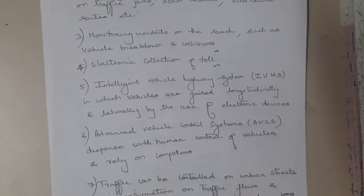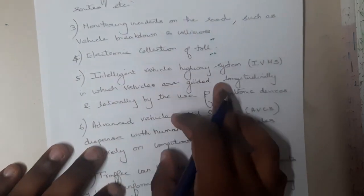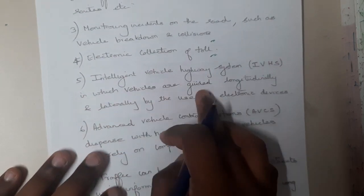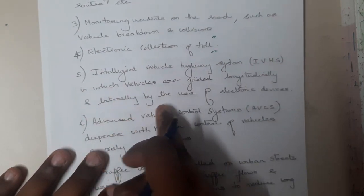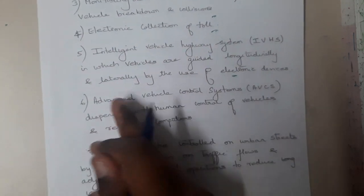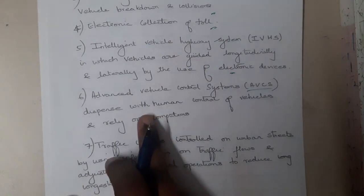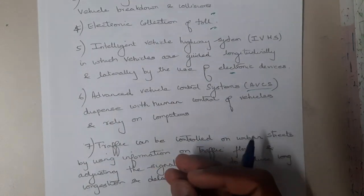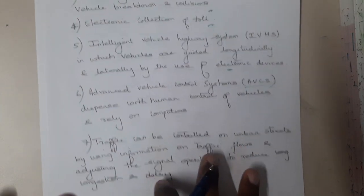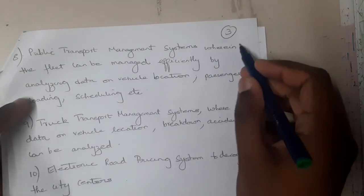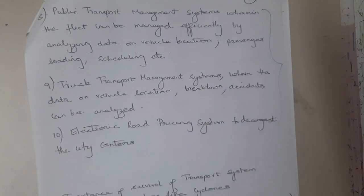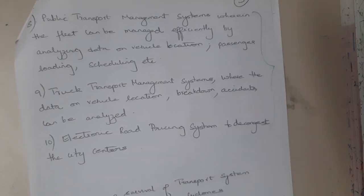Another application is IVHS — Intelligent Vehicle Highway Systems — where vehicles are guided longitudinally and laterally by the use of electronic devices. Please remember the short forms, as examinations may give you a short form and ask you to explain. Similarly, AVCS — Advanced Vehicle Control System — is used to identify humans and other elements. There are a few more applications you can go through. In the next lecture we will discuss these applications in detail. Thank you for watching.